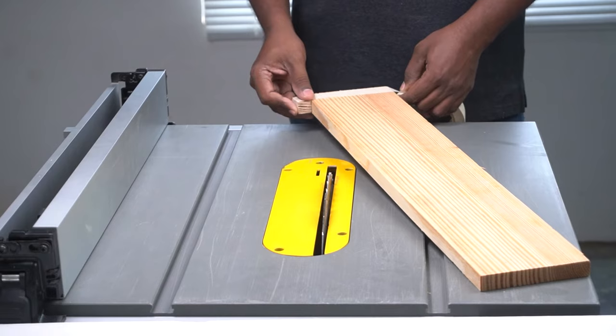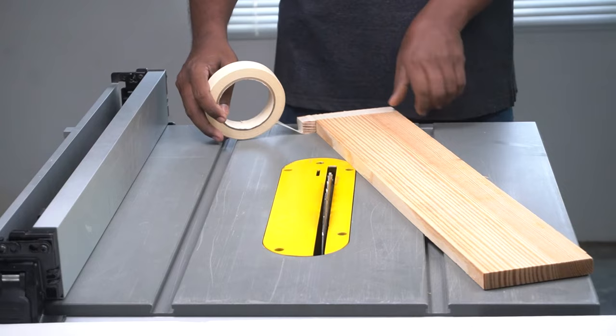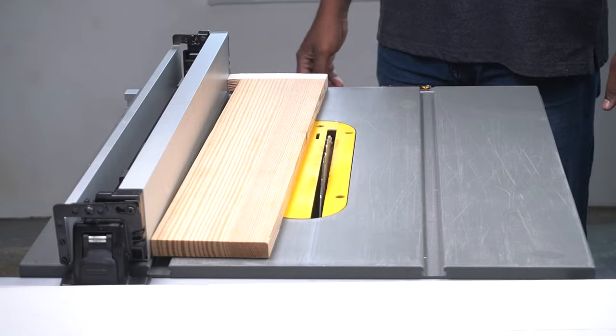Although it's safer to screw or nail them together, it will leave a mark on your wood. In this case I've used masking tape to bind them together. Lay the wood to be cut lengthwise between the blade and the rip fence.